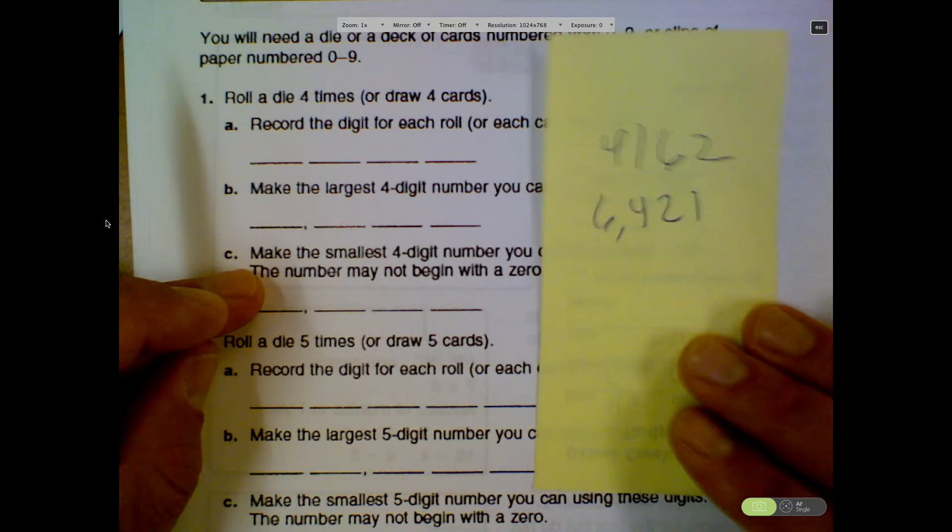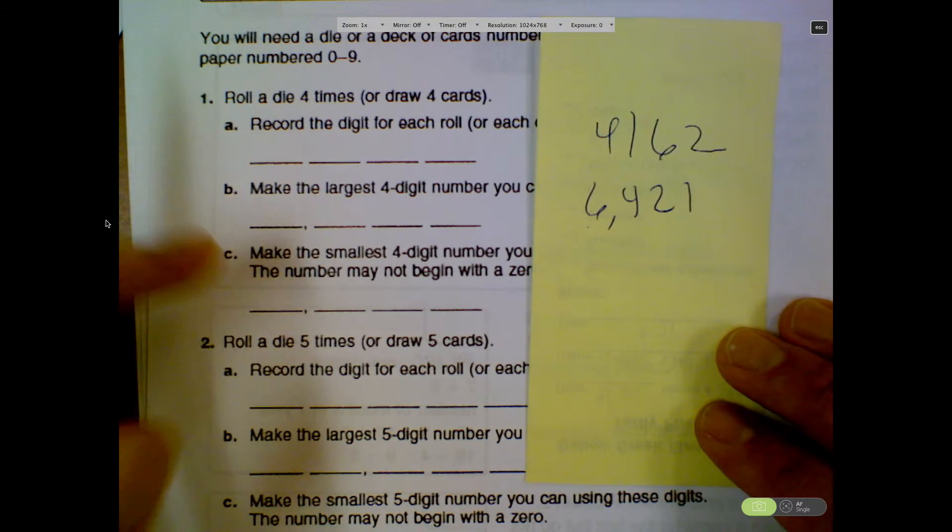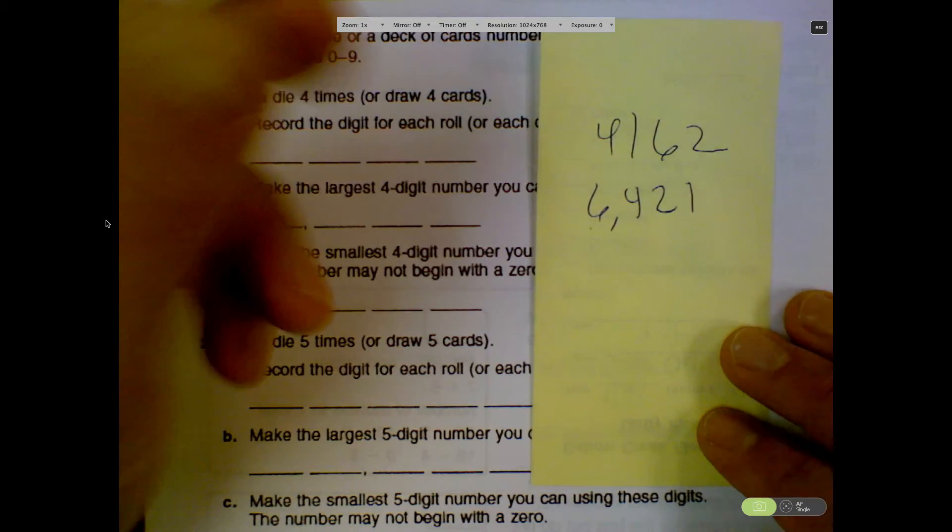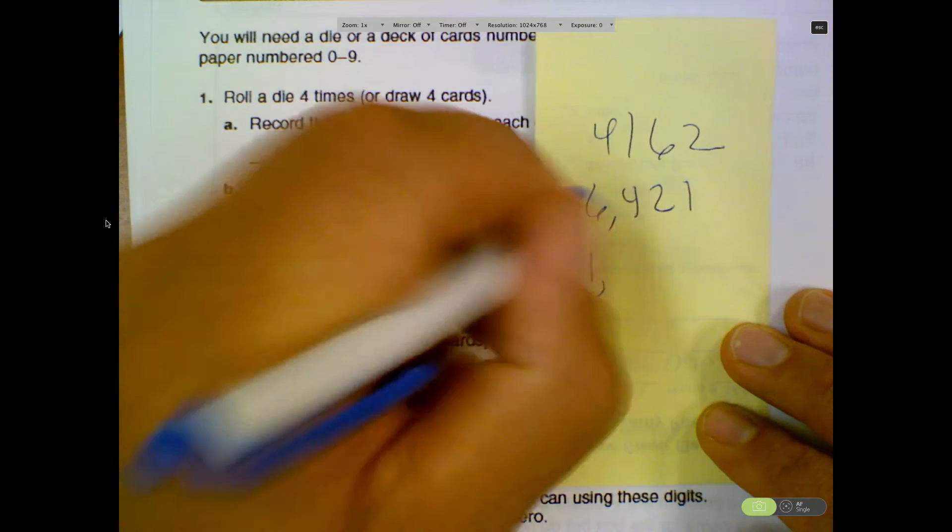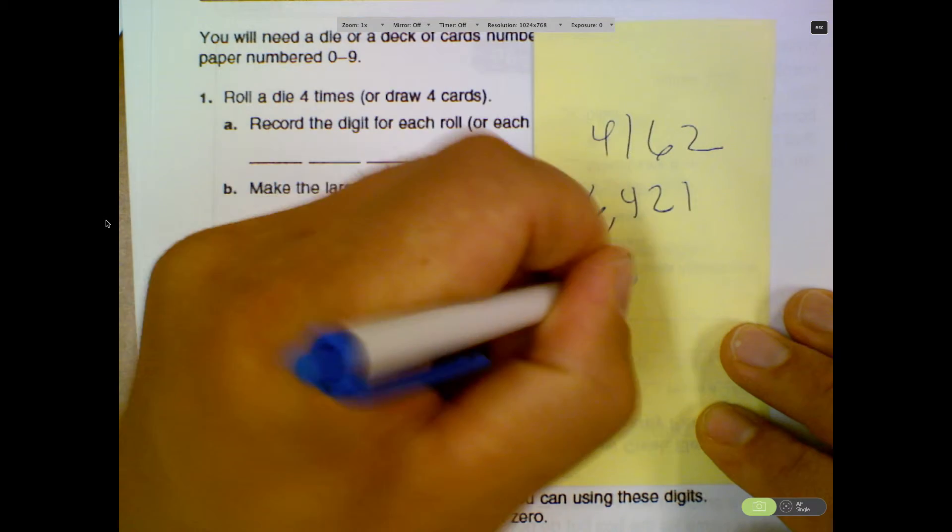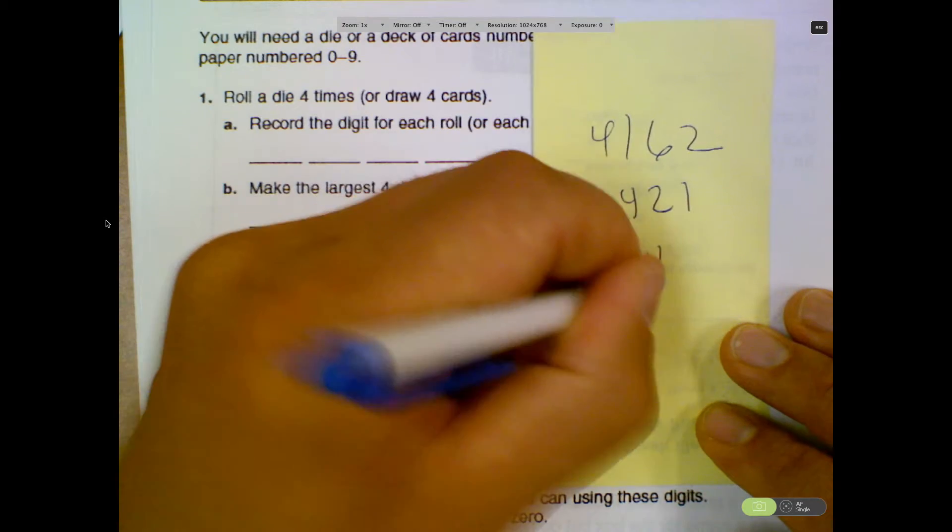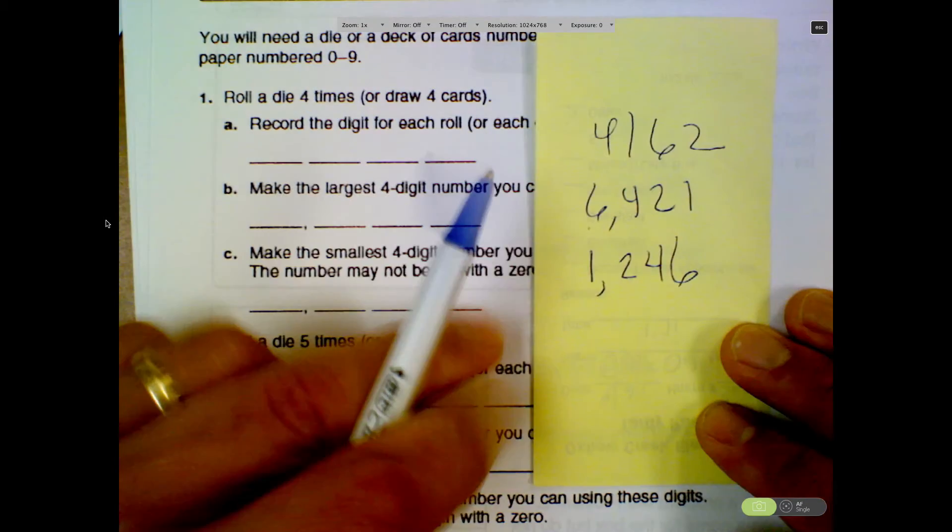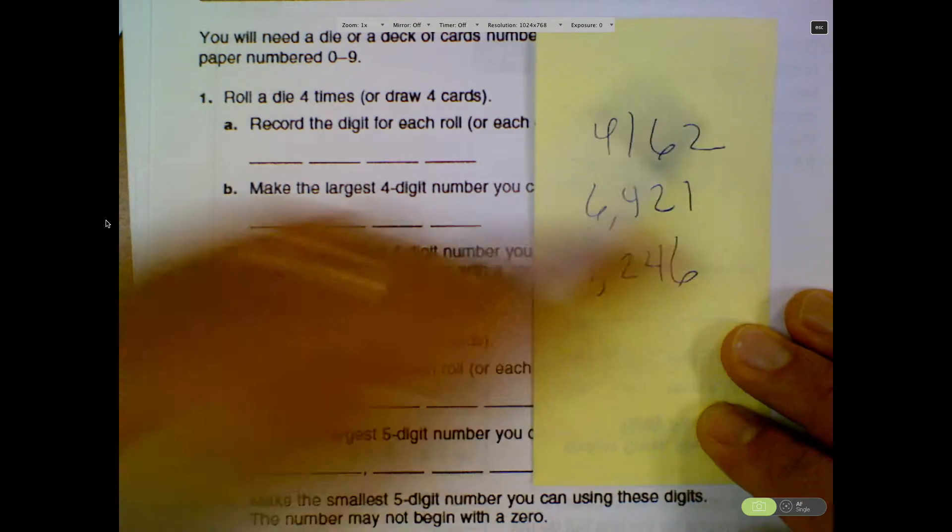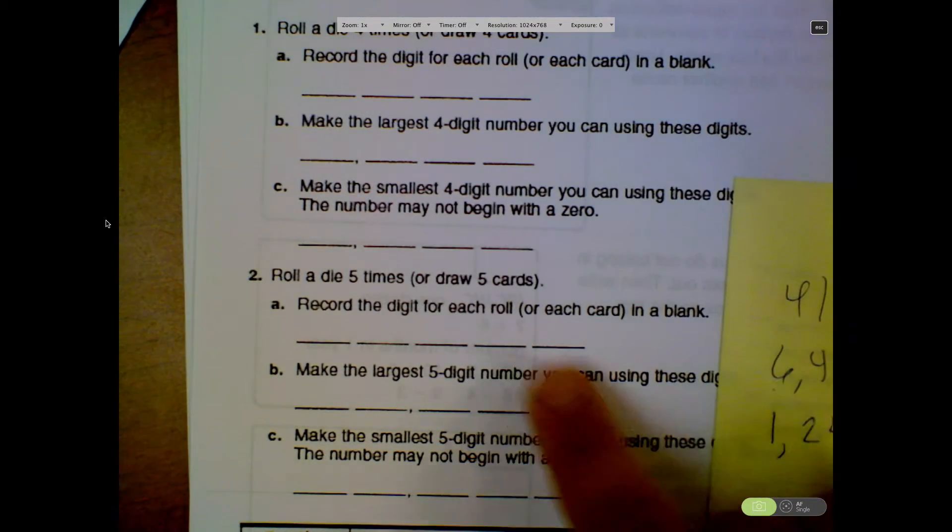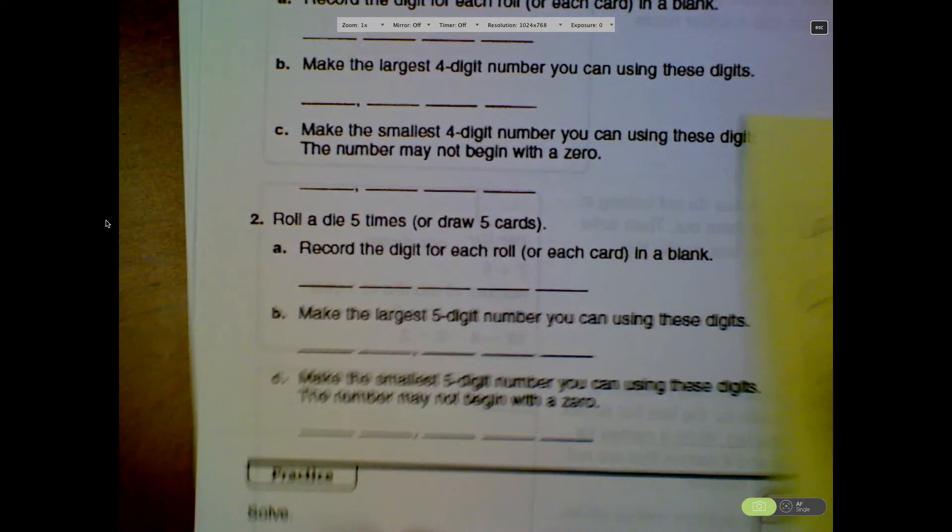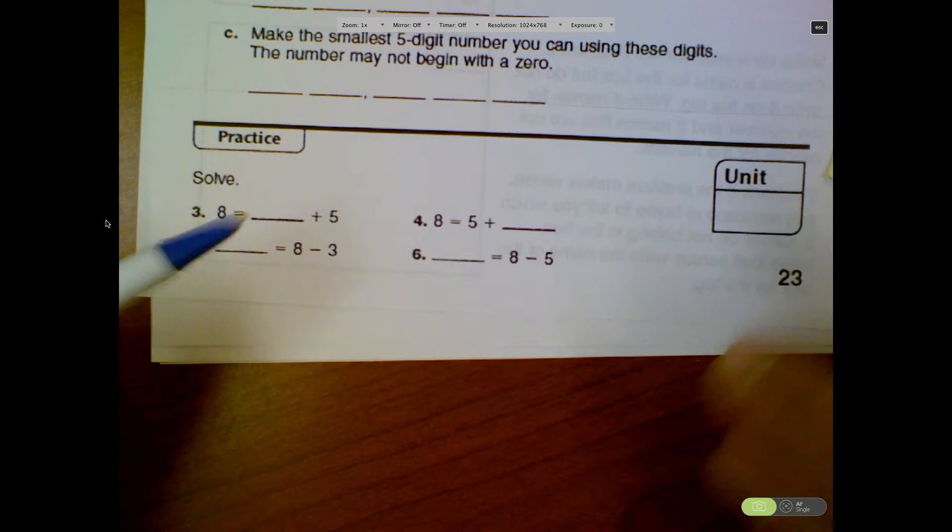Now you're going to make the smallest number possible. Who could tell me that one? Addie? 1,246. Right. And it goes from the smallest digit up to the largest digit to make that. You're going to do the same thing 5 times. They want you to do it 5 times. And then some practice equations at the bottom.